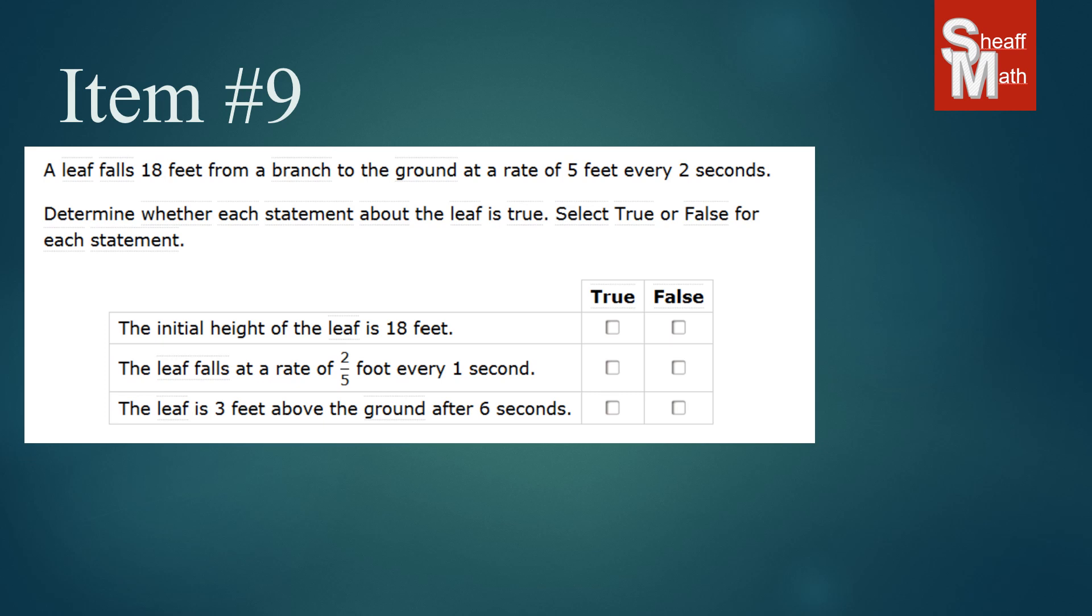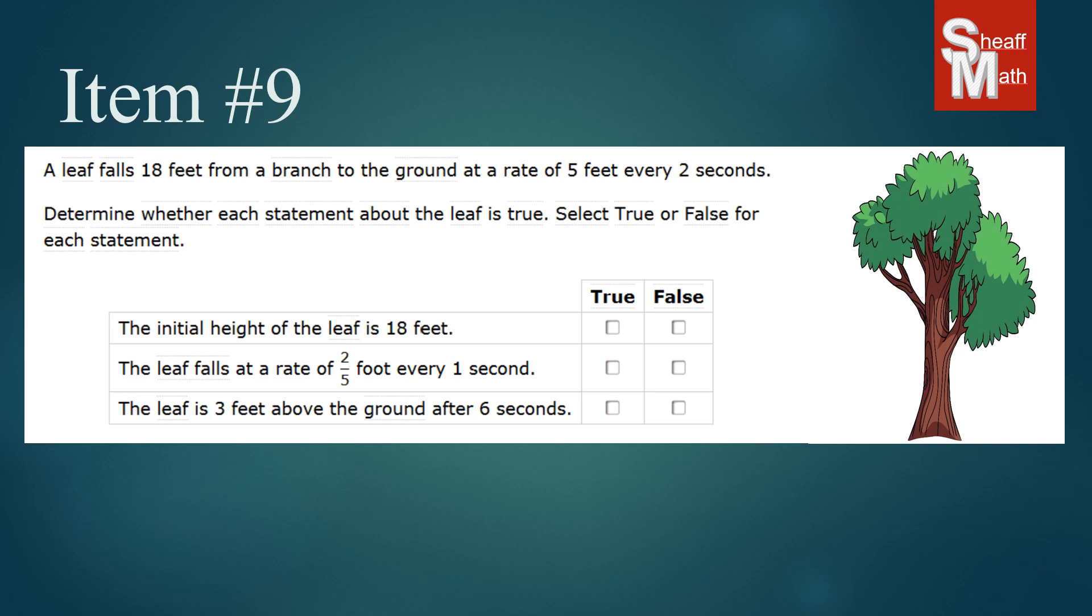And so a leaf falls 18 feet from a branch. So what I'm going to do is I'm going to put a tree here. Now I was able to put this nice beautiful tree here but you can draw a tree. And then what I would do is I would draw a line from a branch where the leaf started and put 18 feet. That's how high it was.